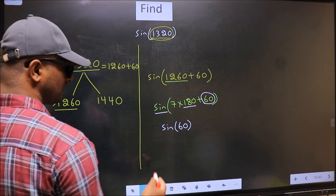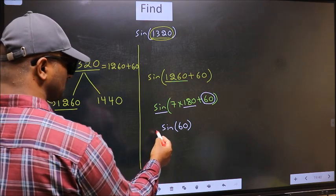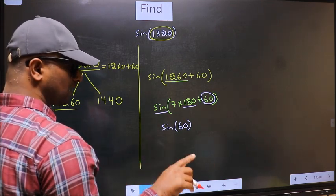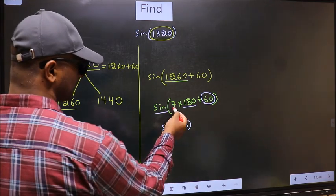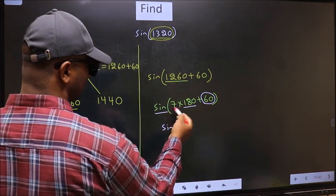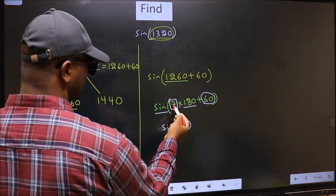Now the question is, will we get here plus or minus? To answer that, we should look at the number before 180. That is 7.